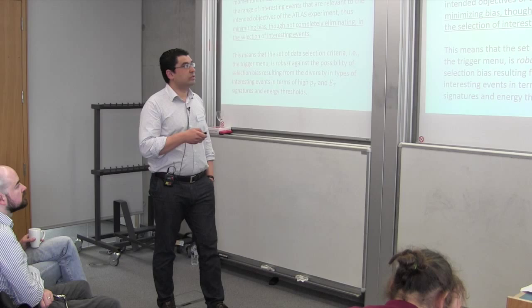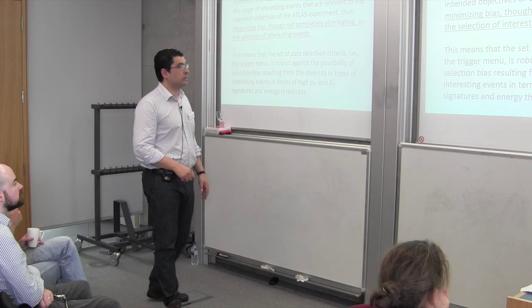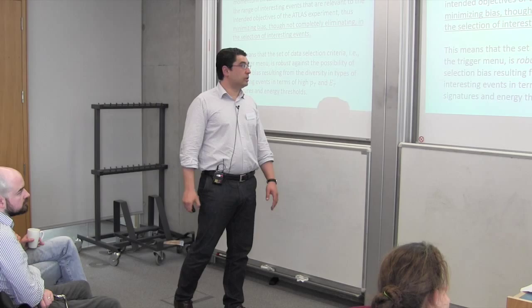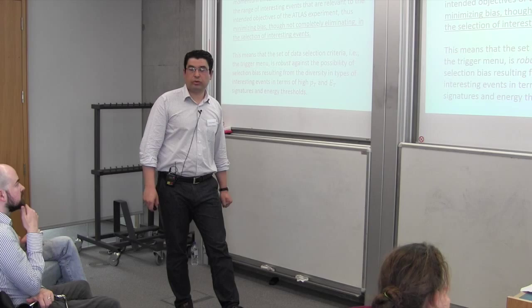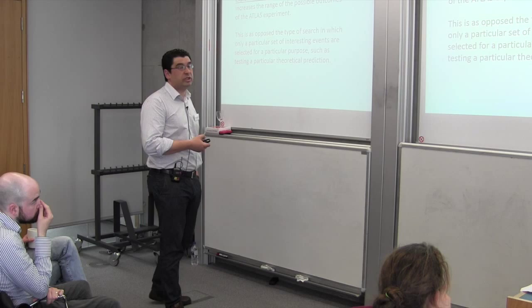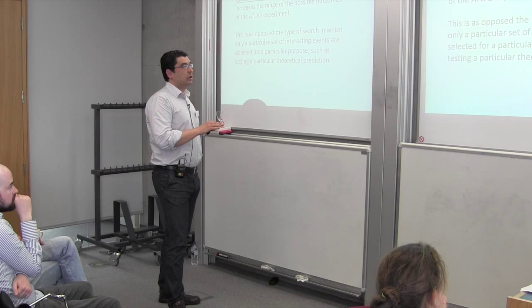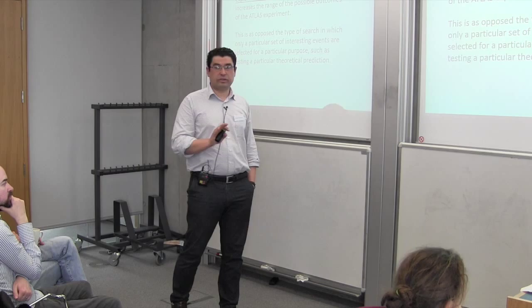In this way the procedure increases the range of possible outcomes of the experiment, making the selection criteria robust against the possibility of selection bias resulting from the diversity in types of interesting events. The strategy of robust data selection enables the implementation of an exploratory data selection procedure — exploratory in the sense that it increases the range of possible outcomes. This contrasts with a search in which only a particular set of interesting events is selected for particular purposes, such as testing a specific theoretical prediction.